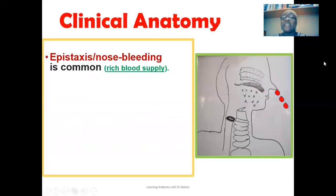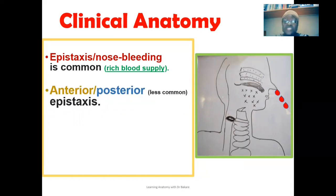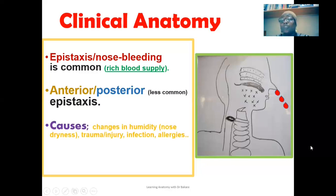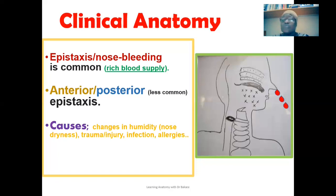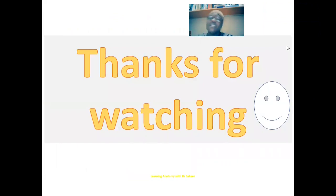In clinical anatomy, epistaxis — also called nosebleed — is common and is attributed to the rich, extensive blood supply of the nasal cavity. There are two types: anterior epistaxis (more common) and posterior epistaxis (less common). Causes include changes in humidity or temperature leading to nasal dryness, trauma or injury, infection, and allergy. The first management option is application of direct pressure on the affected area to help stop the blood flow.